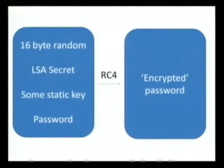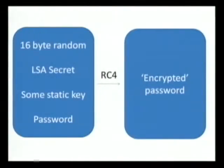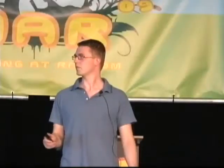How does this reversible encryption actually work? What Windows does is it takes a 16-byte random value, which it generates on the spot — so it's different every time. It takes that LSA secret, which is about 256 bytes, and a static key that's hardcoded in the DLL, and uses those to create a key. It then encrypts the password using RC4 on the Unicode version of the password. Looking at the Active Directory attributes, the first one is the encrypted password — that's the result of that procedure — and the key attribute is that 16-byte random.